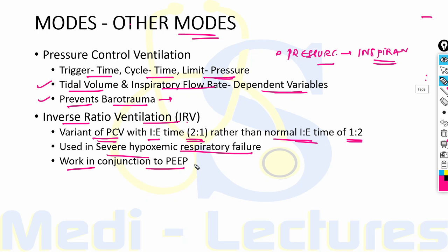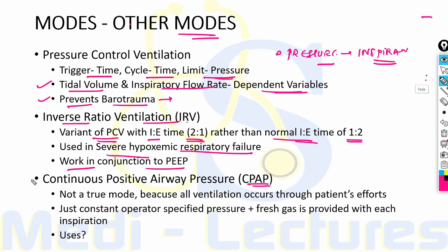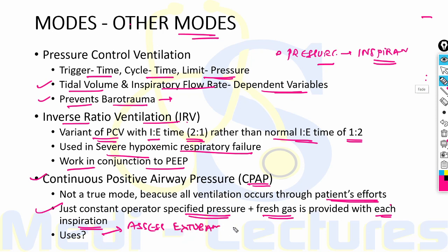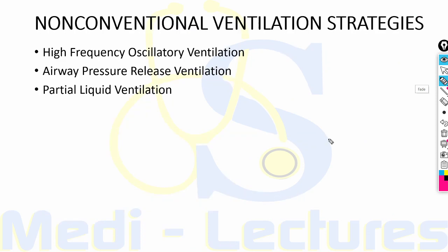Inverse ratio ventilation works in conjunction with PEEP to open collapsed alveoli and improve oxygenation. Continuous positive airway pressure (CPAP) is not a true mode of ventilation because all ventilation occurs through the patient's own efforts — it is simply a constant operator-specified pressure that delivers fresh gas with each inspiration. CPAP is used to assess extubation potential in patients who have been effectively weaned, require little ventilatory support, have intact respiratory drive, and need an ET tube only for airway protection.